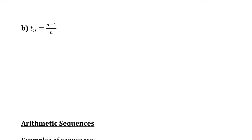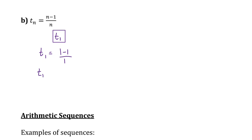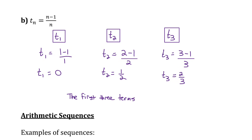Let's try Part B. This formula tells us the relationship between the value of any term and its term number. For term 1, replacing n with 1 gives 0 over 1, which is 0. For term 2, replacing n with 2 gives 1 half. And for term 3, it would be 3 minus 1 over 3, which is 2 thirds. So the first three numbers of this sequence are 0, 1 half, and 2 thirds.